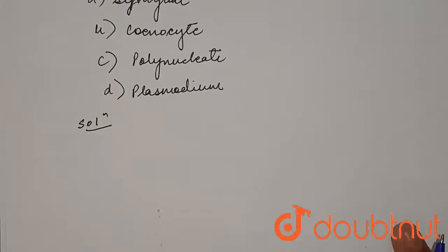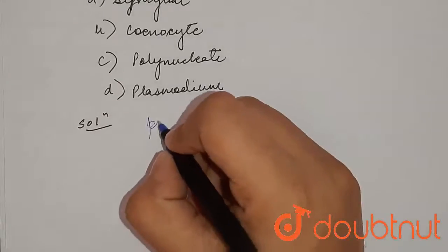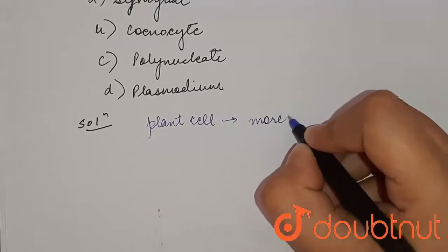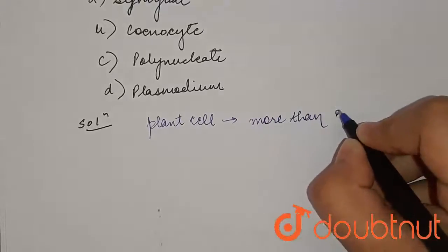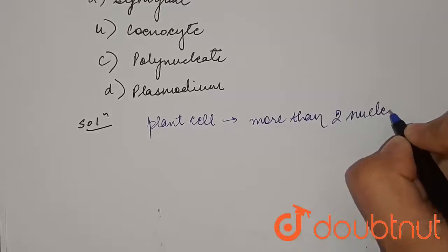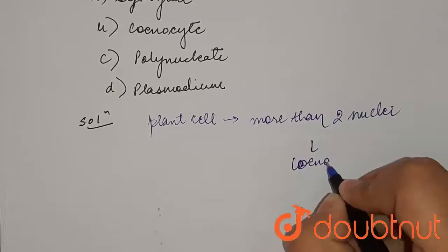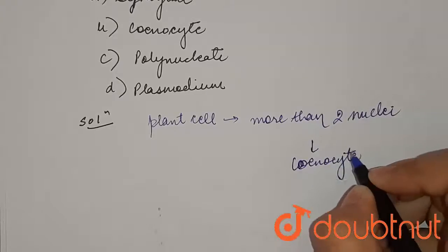So students, a plant cell which is having more than two nuclei, these are known as coenocyte. So it refers to the multi-nucleate condition of cell and it occurs due to multiple...